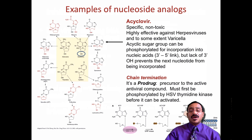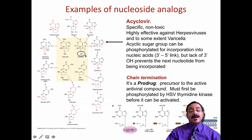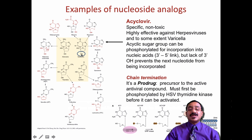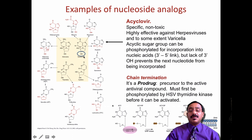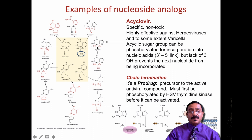Acyclovir functions as a guanosine inhibitor. Looking at the structure: adenosine and guanosine are shown, and the acyclovir analog is the guanosine analog but with a side chain removed. If you compare the structures, you can see the OH group is missing from acyclovir. This acyclic sugar group can be phosphorylated for incorporation into the nucleic acid. But because the OH is removed, the next nucleic acid cannot be incorporated — the link to the next nucleic acid is totally inhibited because there is no side chain for attachment.